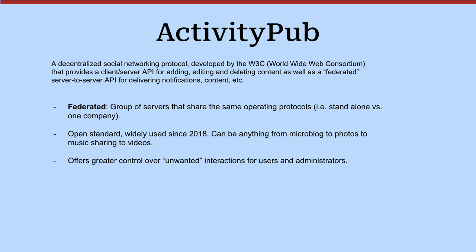It also offers, if you run a server, greater control over unwanted interactions — trolls, spam, harassers — for users and administrators. Because you're federated, if you run a server, you can choose who you talk to. There are lists out there of servers that are run for spam or CSAM, which is child sexual abuse material. Anybody can run a server, but you can choose not to talk to that server. Whereas with Twitter, anybody on Twitter can see you and harass you. With federation, you can say this server always does this — so I don't want to talk to them — and your users never see it. You can control who sees what because it's an independent server.